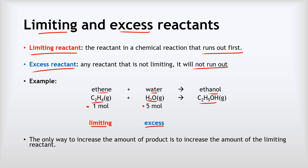Importantly, if we want to increase the amount of product, the only way to do this is to increase the amount of the limiting reactant. If I added more water to this reaction, because there's already more than enough water, adding more won't make any difference. Whereas if I add more ethene, that will make a difference because I'll be able to use up some of that excess water.